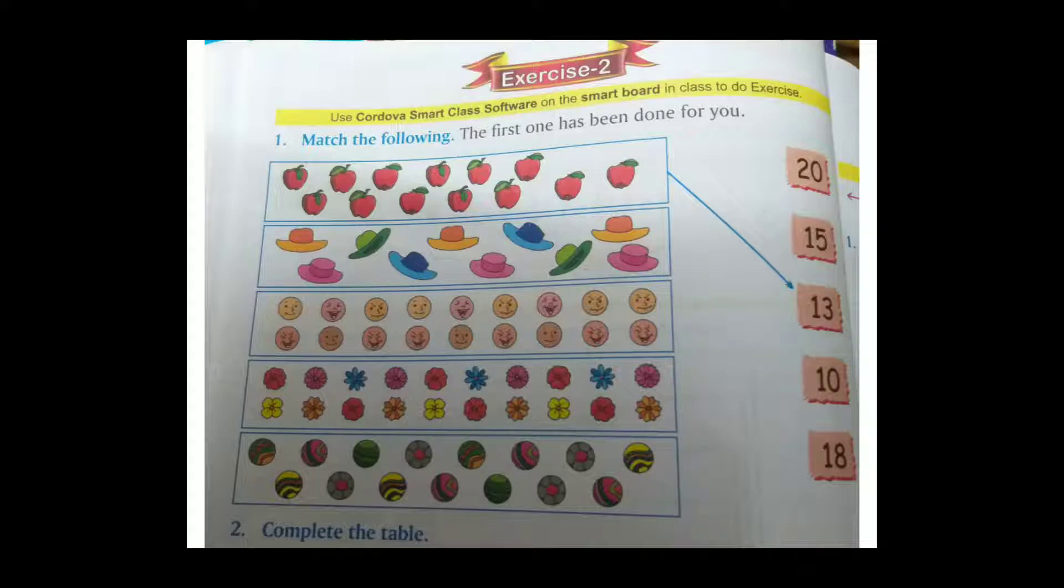Like that, count the total number of faces, smileys and sad faces. 1, 2, 3, 4, 5, 6, 7, 8, 9, 10, 11, 12, 13, 14, 15, 16, 17, 18. So where is 18? Yes, the last one. Like that you have to do the rest of all.